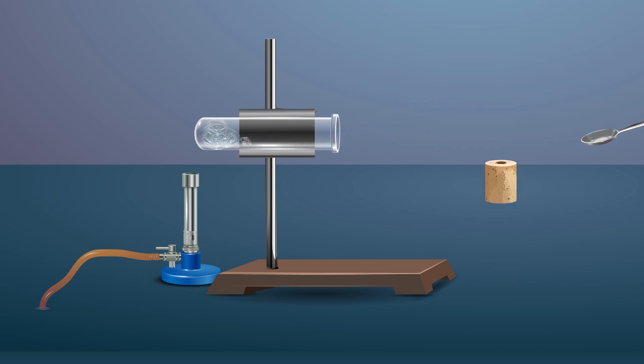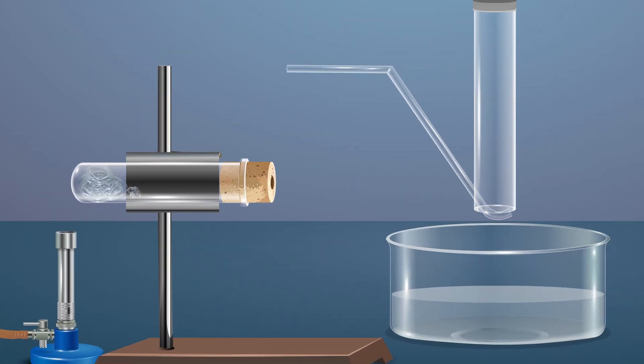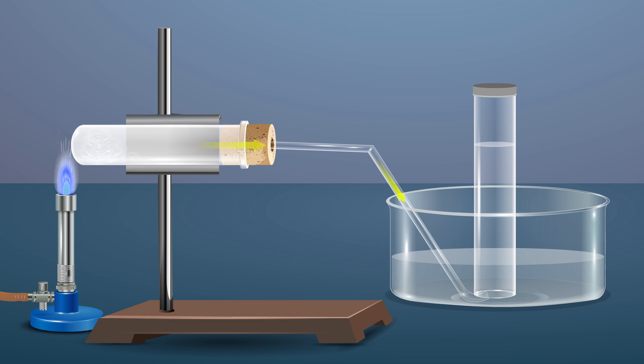Close it with a one-hole cork apparatus and connect the delivery tube to the cork at one end. Keep the other end of the delivery tube towards the trough and place a gas jar on top in an inverted position. Place the burner under the steam apparatus, turn on the knob, and observe the reaction.